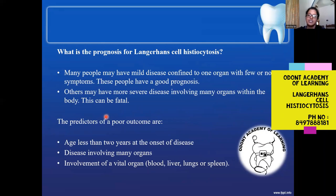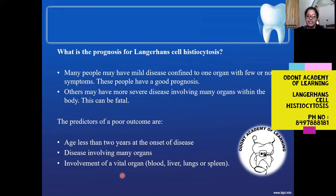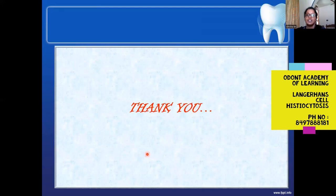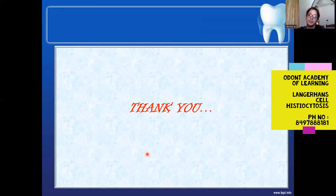Many patients have mild disease confined to one organ with few or no symptoms, giving a good prognosis. Others with severe multi-organ involvement have a comparatively poor prognosis and the disease could be fatal. Predictors of poor outcome include age less than two years at onset, involvement of many organs, and involvement of vital organs such as bone marrow, liver, lung, or spleen. That's all for today's class on Langerhans cell histiocytosis. See you in the next video, thank you.